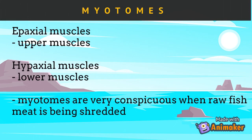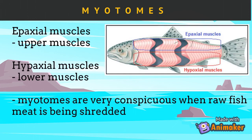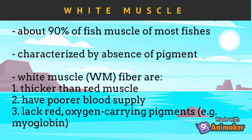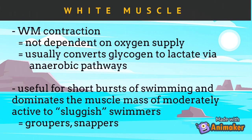Myotomes are very conspicuous when raw fish meat is being shredded. There are two types of myotomes: white muscle and red muscle. In some cases fish are reported to have pink muscle, but in this context we will only discuss white and red muscles. The white muscle is about 90% of fish muscle in most fishes. It is characterized by the absence of pigment depending on the species. White muscle fibers are thicker than red muscle, have a poorer blood supply, and lack red oxygen-carrying pigments such as myoglobin.